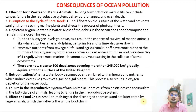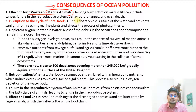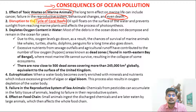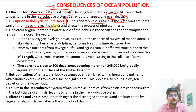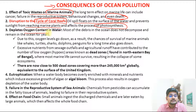Knowing the causes, we must understand the consequences of oceanic pollution. The effect of toxic waste on marine animals is evidently proven, with behavioral changes and even death observed. There is also disruption in the cycle of coral reefs. Oil spills float on the surface of the water and prevent sunlight from reaching marine plants, impacting photosynthesis and removing coral food. When algae are removed, corals start to bleach.